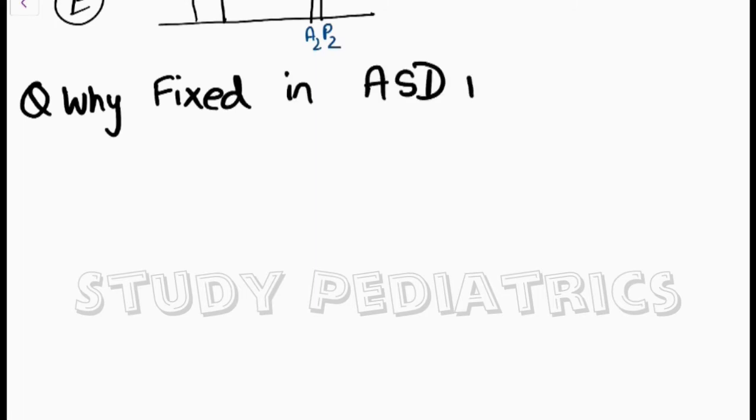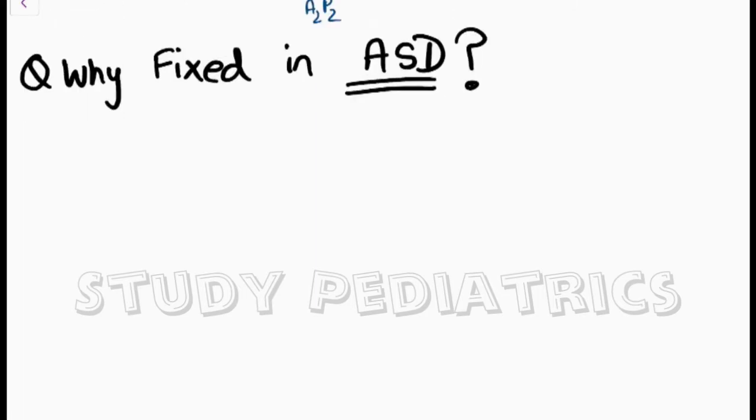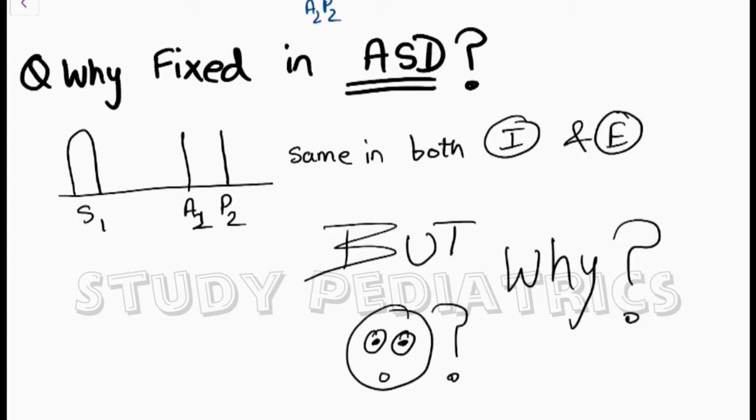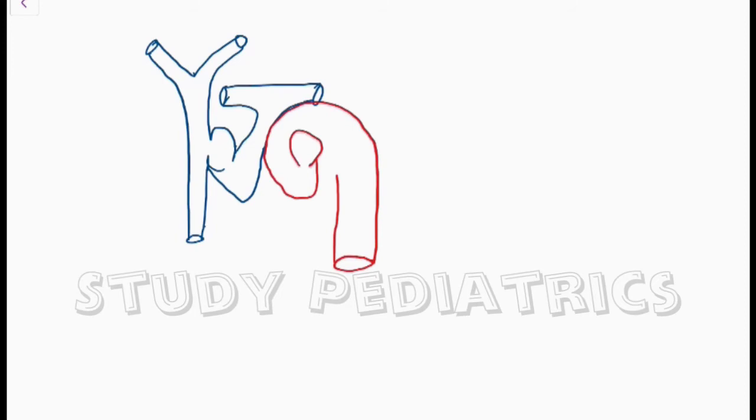Now let's see what happens during ASD. In ASD, there is fixed split. But why fixed split? Fixed here refers to same split in both inspiration and expiration. Let me explain. Let's draw this diagram again and see what happens in ASD.